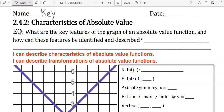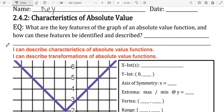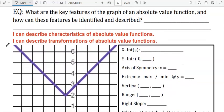2.4.2: Characteristics of Absolute Value. Essential question: What are the key features of the graph of an absolute value function, and how can these features be identified and described?